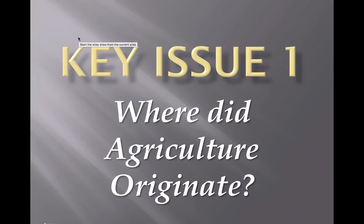Who's excited to learn a little bit about some agriculture? I know I am — a little livestock, a little crops, a little farming, a little ranching. This is Key Issue 1 for Chapter 10, our agriculture unit. Key Issue 1 is going to explain a little bit about the origins of agriculture and then the beginnings of subsistence versus commercial agriculture.